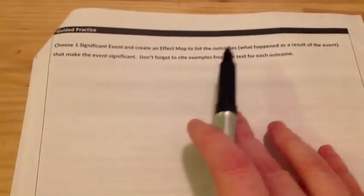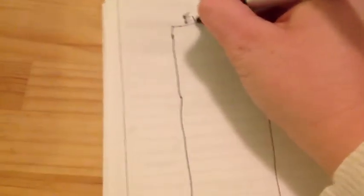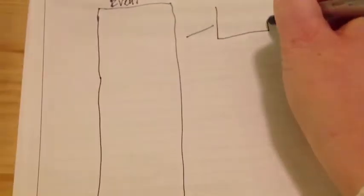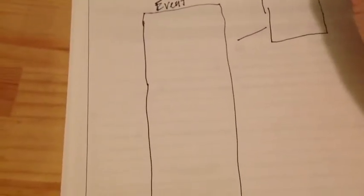Now in guided practice we're going to choose one significant event and create an effect map to list the outcomes — the outcomes are what happened as a result of the event that make it significant. Don't forget to cite examples from the text for each outcome. We're just going to do the effect side: the significant event goes on one side, and the outcomes or 'what happened' go on the other side. We need at least three outcomes.